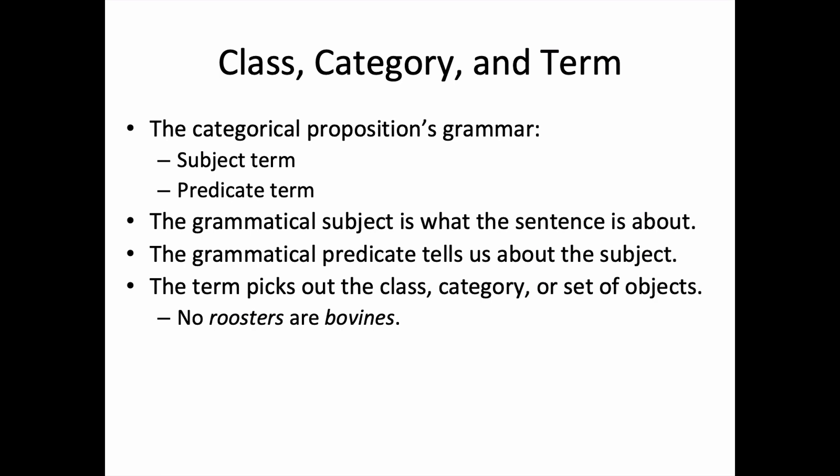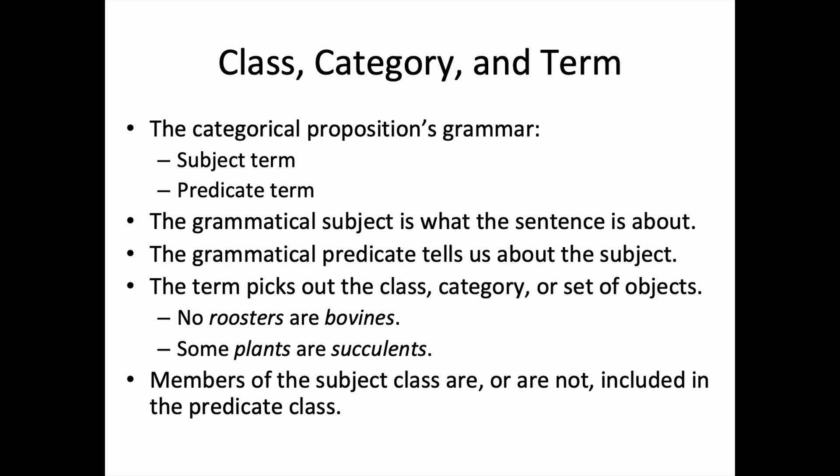For example, 'no roosters are bovines' — here 'roosters' is the subject term reflecting the subject class, and 'bovines' is the predicate term reflecting the class of bovines. Similarly, 'some plants are succulents' — 'plants' is the subject term, 'succulents' is the predicate term. We can also speak of the subject class 'plants' and the predicate class 'succulents.' Members of the subject class are or are not included in the predicate class. For a discussion of inclusion in or exclusion from a class, please see the video 'What is the distribution of a term in a categorical proposition?'